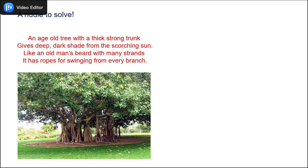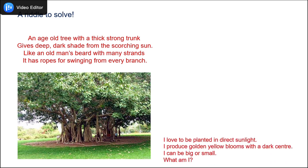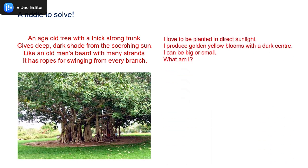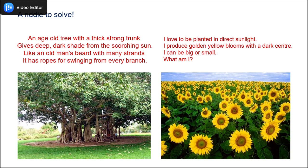Let's solve another one. I love to be planted in direct sunlight. I produce golden yellow blooms with a dark center. I can be big or small. What am I? Yes, it's the sunflower.